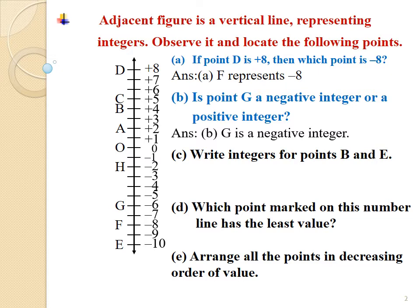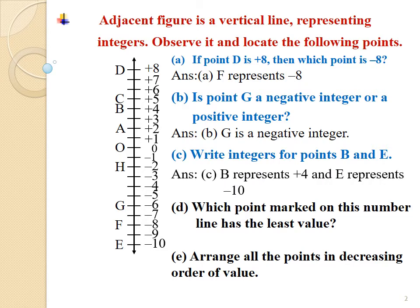Sub-question c: Write integers for points B and E. By observing the number line, it is clear that B represents plus 4 and E represents minus 10.